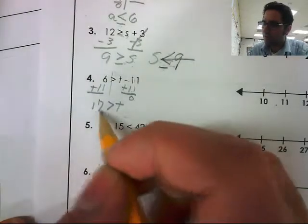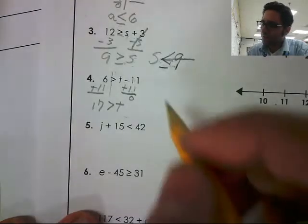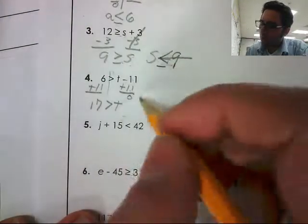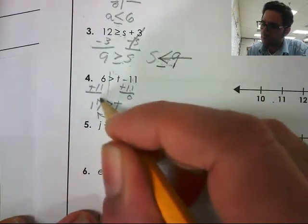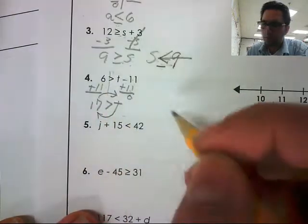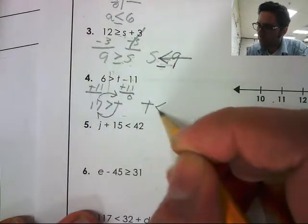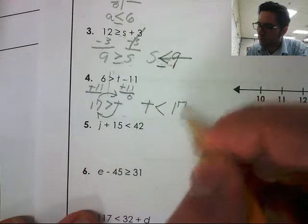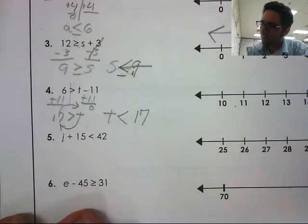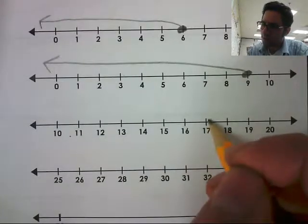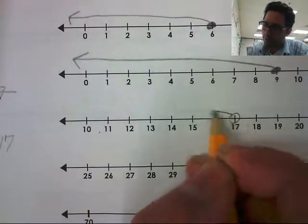All right, so 17 is greater than T. And I'm going to rewrite this so the T is on the left side. So I'm going to flip this over here. Flip this over here. Giving me T on this side. I'm going to flip my inequality sign. So now it reads T is less than 17. Less than is an open circle. And less means it goes to the left.